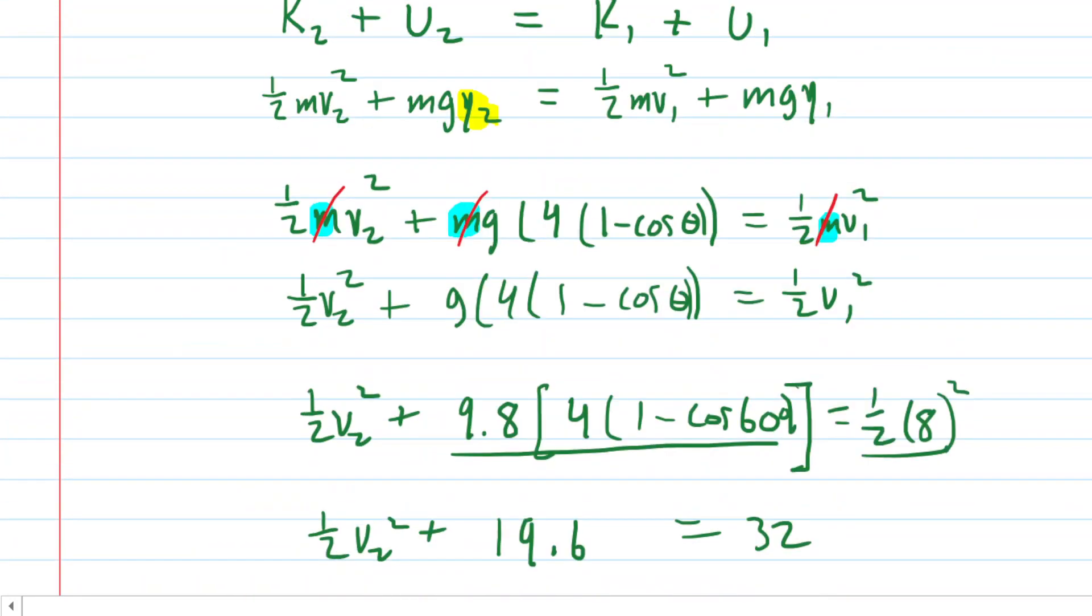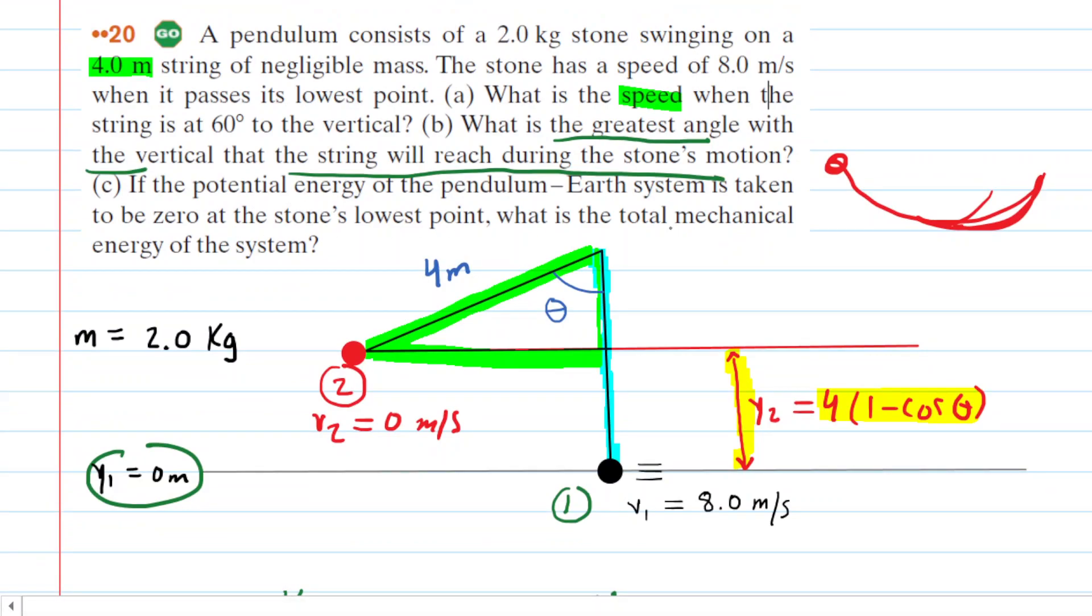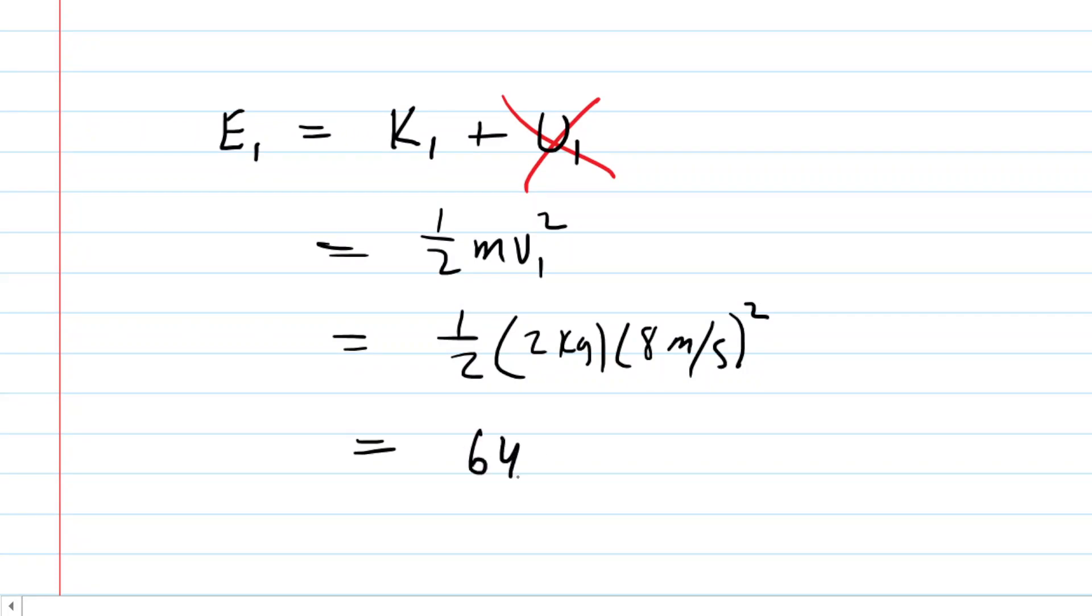We go to part C now. And part C is asking us for the total mechanical energy of the system. So, that's pretty easy because energy is conserved. So, what we could do is simply select position 1 and calculate the total mechanical energy at that point. At any other point in the system, that energy would remain constant. So, it would be the same value as it is at position 1. Now, the energy at position 1 was simply the kinetic energy. Remember that the potential energy at position 1 would be 0 because the height was 0. So, all we really need to do now is calculate 0.5 times the mass times the speed at position 1 squared. We have all of these values. So, when we plug that in, we will get 64 joules. That is the total mechanical energy at position 1, but it's also the total mechanical energy of the system because, again, that energy is conserved throughout.